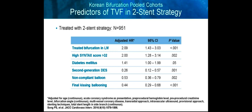Before employing a two-stent strategy, it is important to recognize the risk factors for target vessel failure. In this study from Korea of 951 patients, a treated bifurcation in the left main with osteoRestenosis of the circumflex, a high SYNTAX score greater than 32, and diabetes are all risk factors for target vessel failure using a two-stent strategy. However, second-generation drug-eluting stents, non-compliant balloon use, and final kissing balloon inflation all reduce the risk and should be considered the standard of therapy.